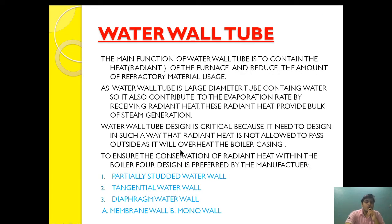The main function of a water wall tube is to contain the radiant heat of the furnace and reduce the amount of refractory material used. The water wall tube is large in diameter and contains water, so it also contributes to the evaporation rate by receiving radiant heat.